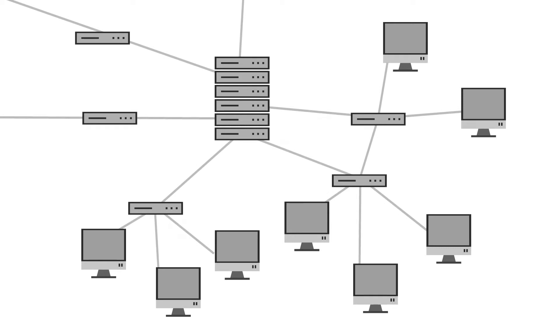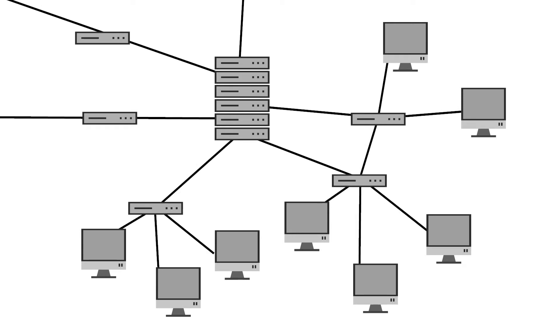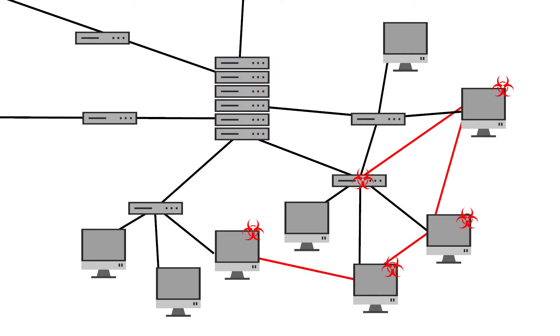What sets CyberGraph apart is the way we manage and process the data. We leverage the highly graph-based nature of computer networks and generate graph data structures using hand-curated elements of the underlying information, resulting in a highly expressive and informative representation. This allows us to utilize recent advancements in graph machine learning and artificial intelligence to build algorithms which can learn patterns of interactions between the elements of the graph, which we can then use to identify malicious activity.